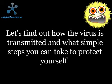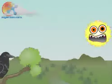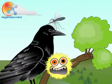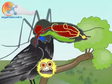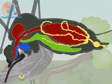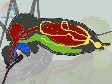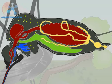Let's find out how the virus is transmitted and what simple steps you can take to protect yourself. Certain types of female mosquitoes are able to acquire the virus by taking a blood meal from an infected bird or other animal. This blood meal allows female mosquitoes to produce their eggs. The virus travels into the digestive system of the mosquito with the blood meal and quickly escapes into the body cavity.